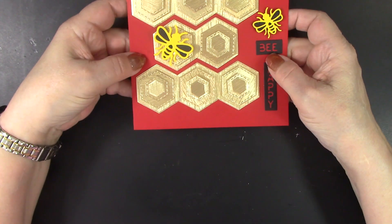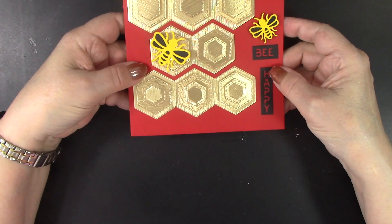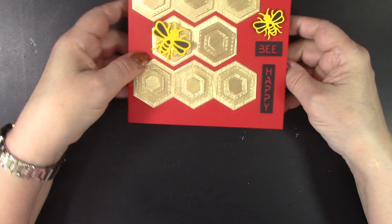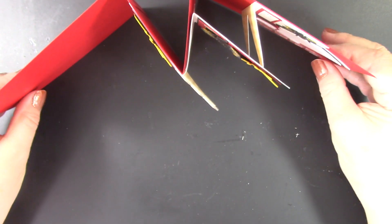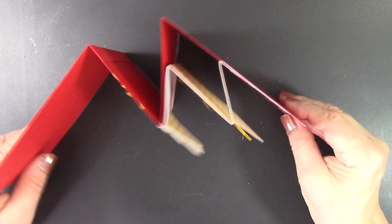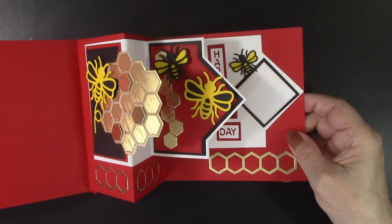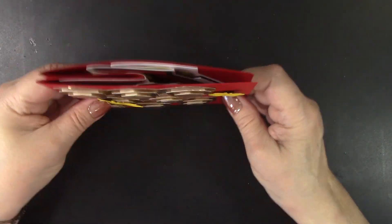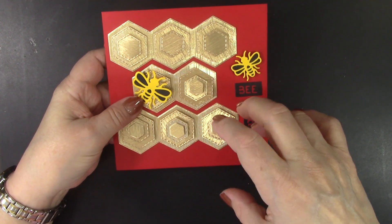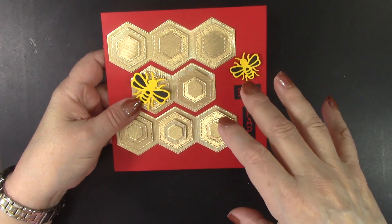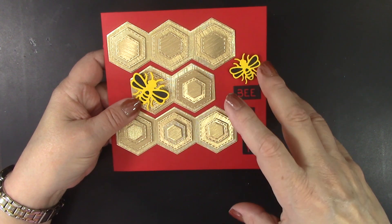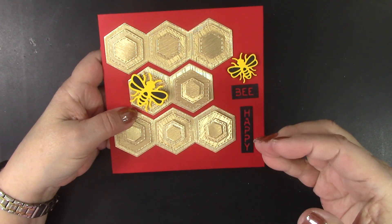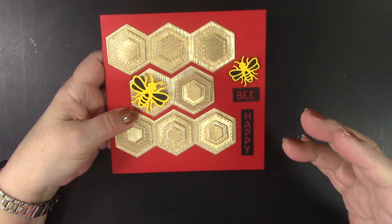So we have a square card, and it has those really cute honeycombs and bees and Be Happy on the front. And then when they open it, they're going to have this really fun pop-out inside with more honeycomb, more bees, Happy Bee Day. So there is another way that we could use these innovative On The Move fun fold dies from Crealies. I love how this turned out, and I hope my card inspired you to give some of these ideas and products a try.